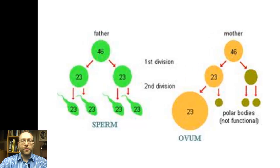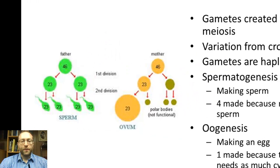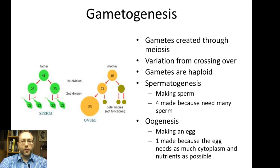In these diagrams, you see the two different processes of gametogenesis. One is spermatogenesis, which is how the father's sperm is produced, and the other is oogenesis, which is how the egg is produced. The gametes are created through a process called meiosis, which we went through in an earlier vodcast. Variation is produced in two different ways: one is by crossing over in meiosis, and the other is random — the particular chromosome that goes into a particular gamete is random; it could be one homologous chromosome or the other.